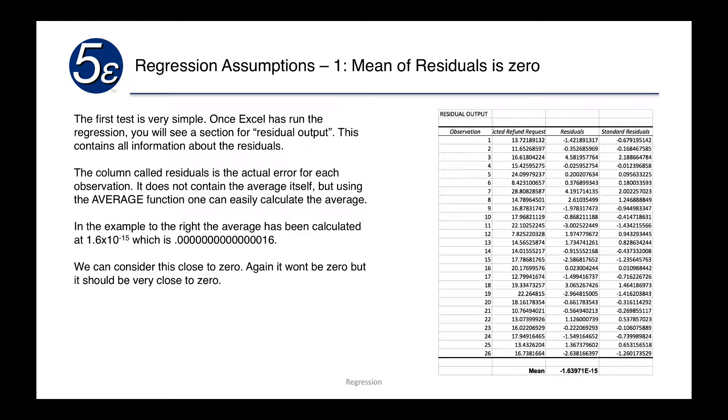The first test is actually very simple. Once Excel has run the regression you'll see a section for residual output that contains all the information about the residuals. The column called residuals, which is the third column over, is the actual error for each observation. It doesn't contain the average itself, but simply using the average function we can calculate what the average of the residuals are.